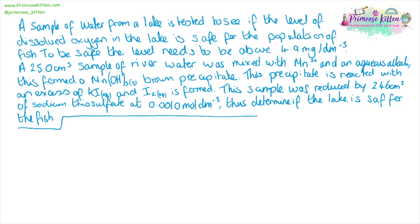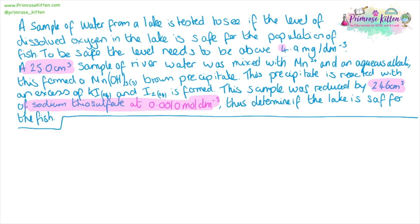A sample of water is tested to see if the level of dissolved oxygen in the lake is safe for the population of fish. To be safe, the level needs to be above 4.9 mg dm⁻³. A 25 cm³ sample of river water is mixed with manganese and aqueous alkali, forming manganese hydroxide as a brown precipitate. This precipitate is reacted with excess potassium iodide and iodine is formed. The sample is then titrated against 24.6 cm³ of 0.001 mol dm⁻³ sodium thiosulfate. Determine if the lake is safe for fish.